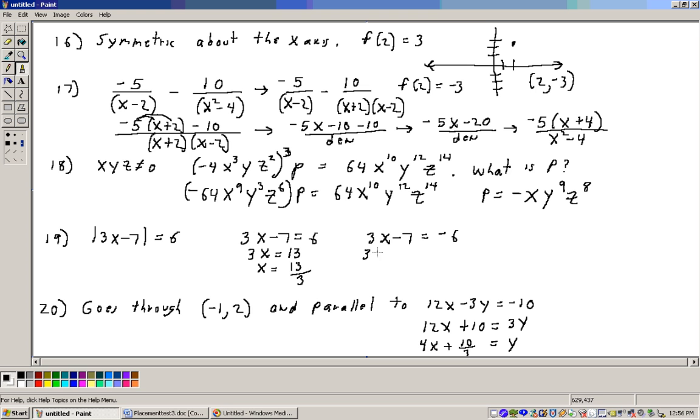And the other answer is going to be, well, add the 7, and I get 1, add 7 to both sides, and you get 1, divide through by 3, and you get 1 third.